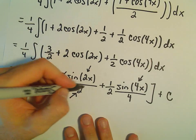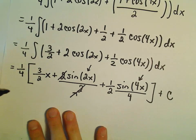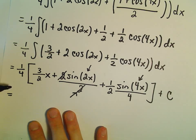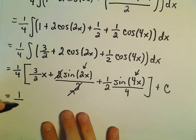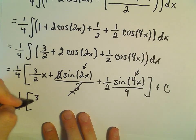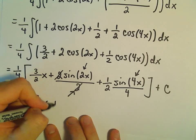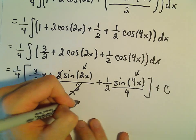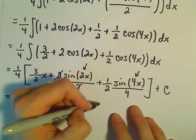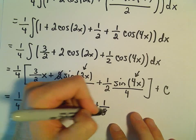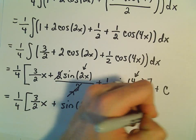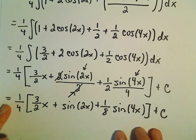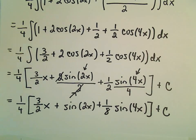So again, I think we can just simplify things a little bit. The 2 and the 2 will cancel. We could always distribute the 1 fourth. I'm not going to. So I'm just going to leave it out front. We've got 1 fourth times 3 over 2x. We would have sine of 2x. And then we would have a 1 eighth sine of 4x plus c. And we've now got our antiderivative.